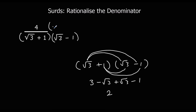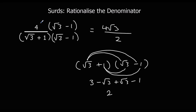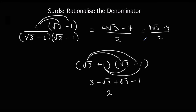If I times the bottom by this, I've got to times the top by the same thing — because that's how we keep fractions equivalent. We know the bottom's going to be 2, because we've just worked that out. And on top, I've got 4 times root 3, which is 4 root 3, and 4 times minus 1 is minus 4. So that leaves me with 4 root 3 minus 4 over 2. I can simplify that — I can halve the top — so that leaves me with 2 root 3 minus 2.